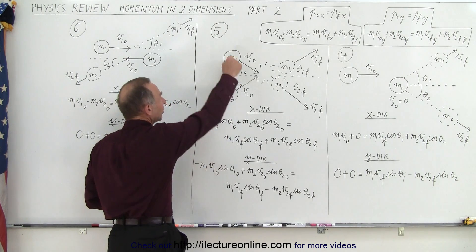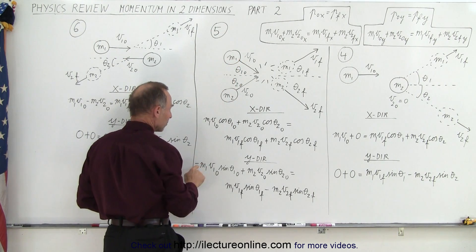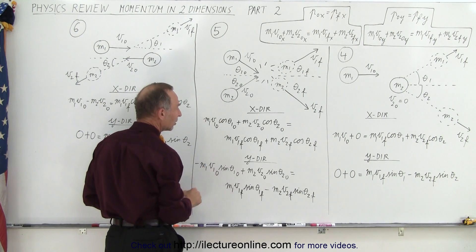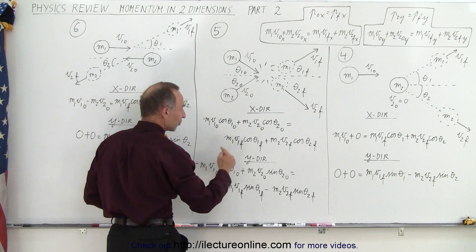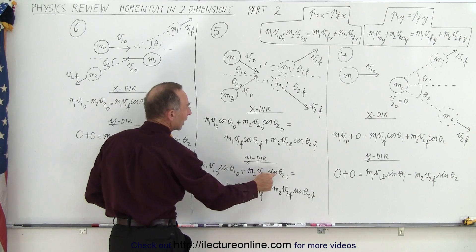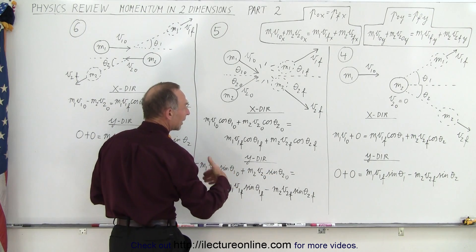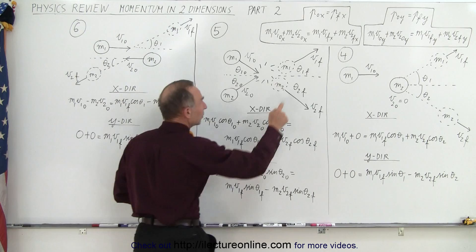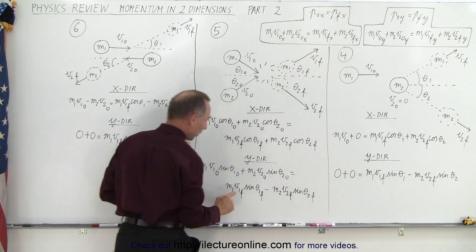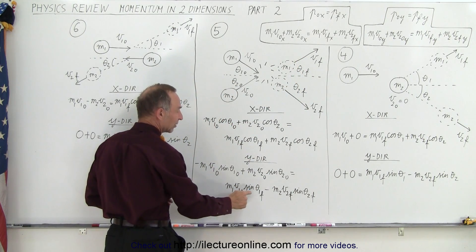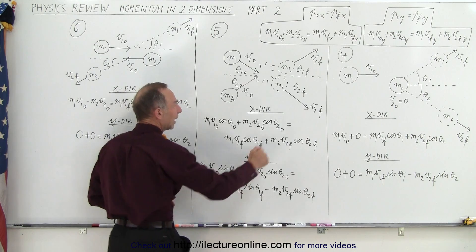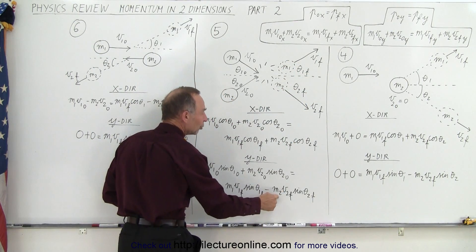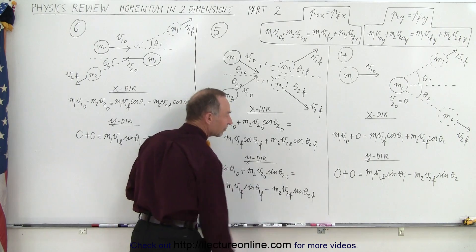So in the y direction, this one is moving downward, so it's minus M1 V1 initial times the sine of the angle, and this one is moving upward, so it's plus M2 V2 initial times the sine of the angle. That equates to the final momentum. In the final momentum, this object is moving upward — so that's positive — M1 V1 final times the sine of theta 1 final, and this one is moving downward, so it's minus M2 V2 final times the sine of the final angle.